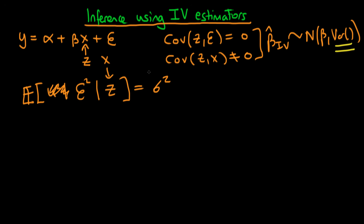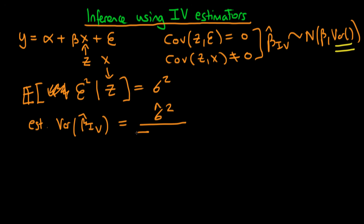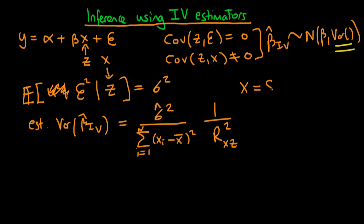If we assume this in addition to the Gauss-Markov conditions, then we can actually derive an estimated variance for beta hat IV. The estimated variance of beta hat IV is equal to sigma hat squared divided by the sum from i equals 1 to n of (xi minus x-bar) squared — that's the total sum of squares in X — divided through by the R-squared from the regression of X on Z. This R-squared comes from the first stage of IV estimation where we regress X on our instrument Z.